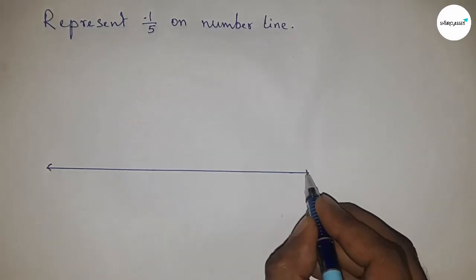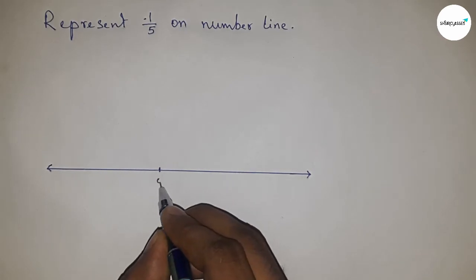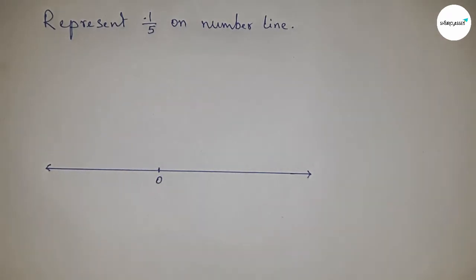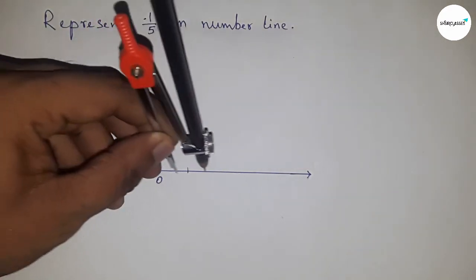the number line. First, draw a line of any length and mark the ends. Mark this as zero. Next, we need to mark the numbers on the line